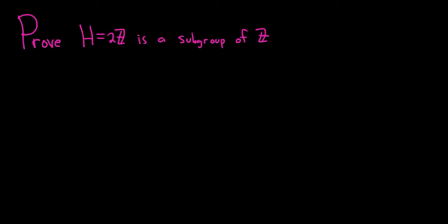So here h is equal to 2Z — h is all of the multiples of 2, so every element in h looks like 2 times n, where n is an integer. And our g here is going to be the set of integers, and the operation is just addition.